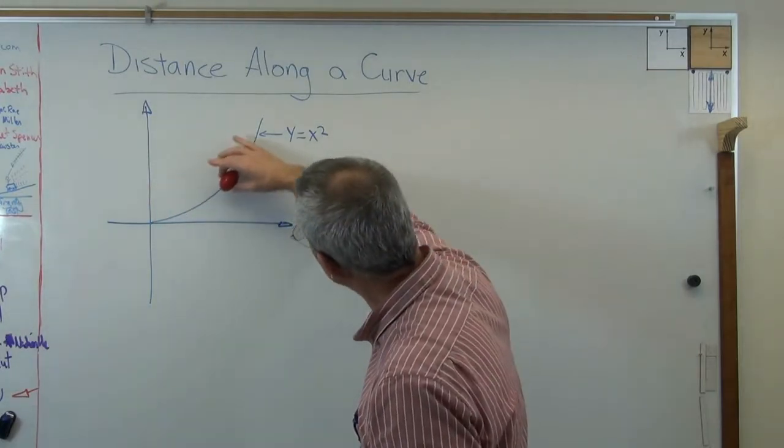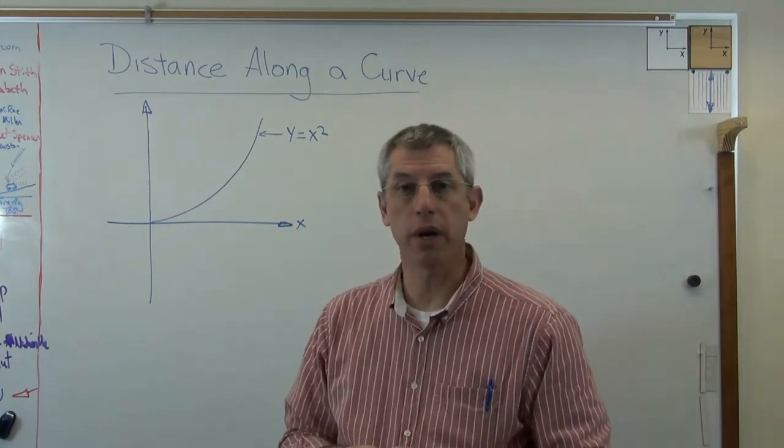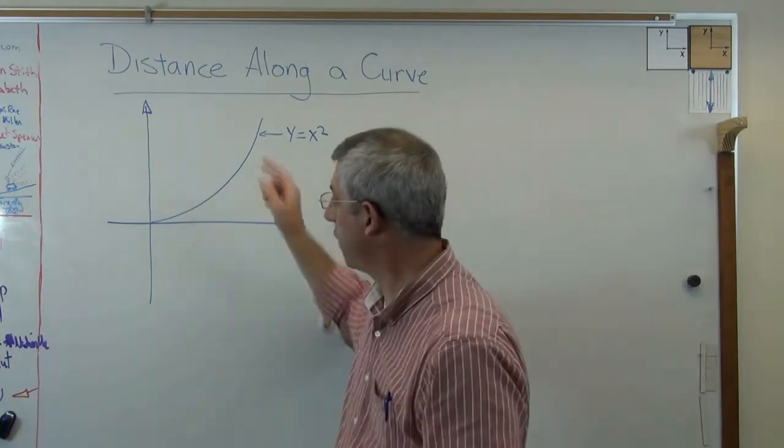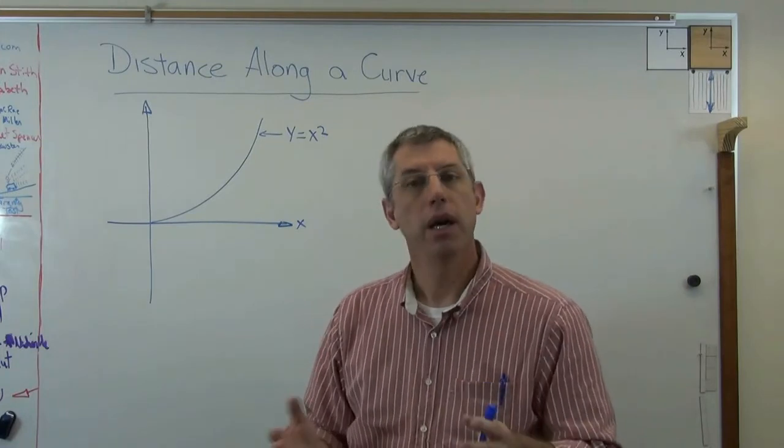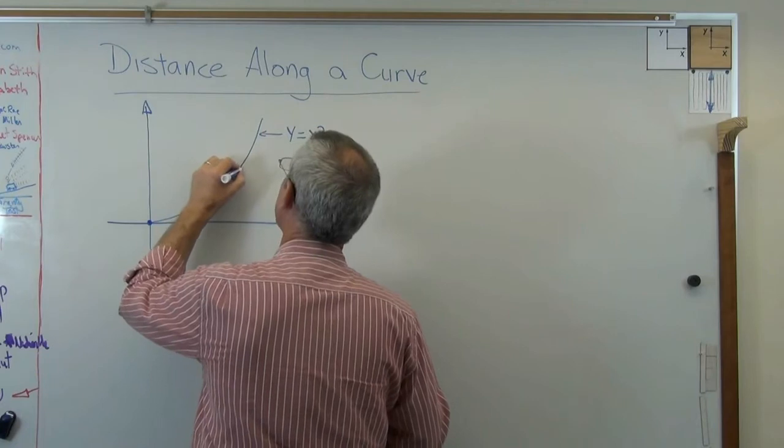So the egg might be moving along that path. Well in real life that egg could be a lot of things. It could be maybe a rocket going up into space. It could be a car going around a turn. It could be lots of things. And the question is,